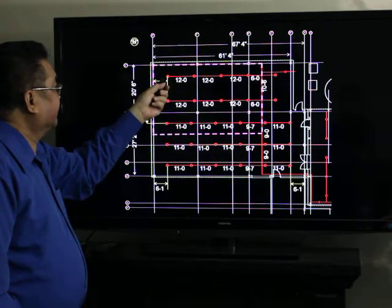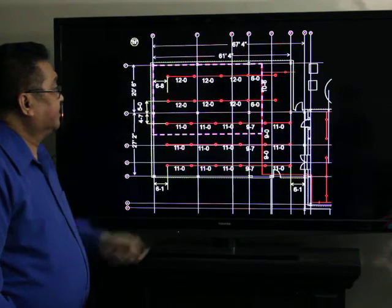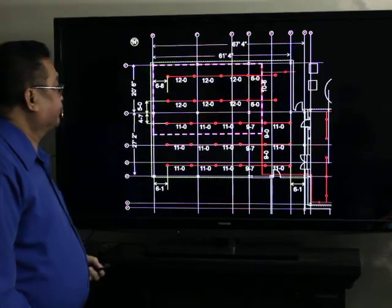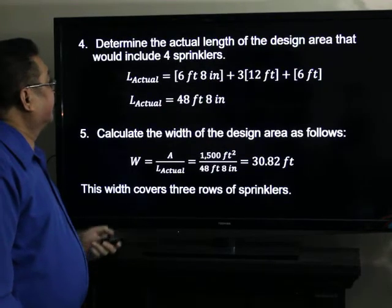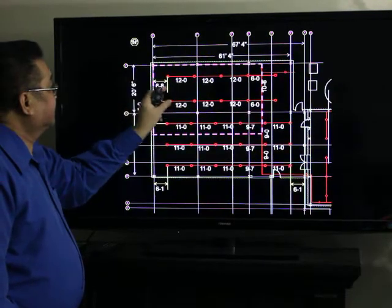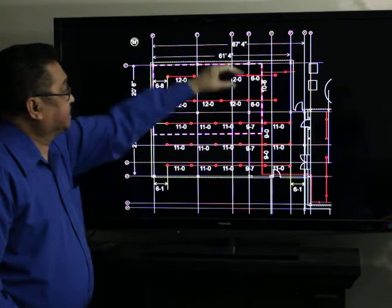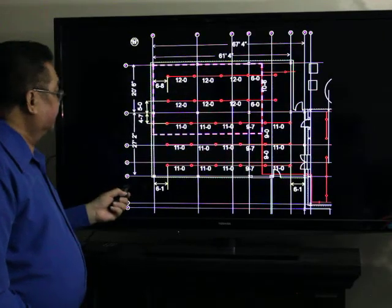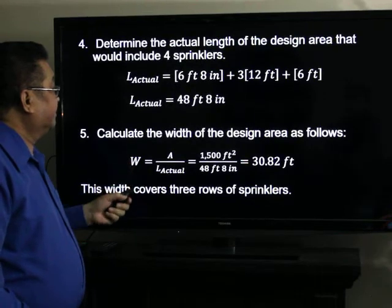We have 6 feet 8 inches, 12 feet, 12 feet, 12 feet, and 6 feet here up to here. Determine the actual length of the design area that would include 4 sprinklers. So 6 feet 8 inches, 12 feet times 3, and 6 feet here, the total is 48 feet 8 inches.